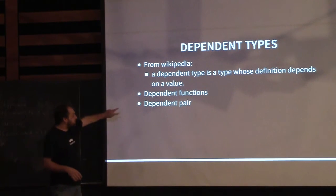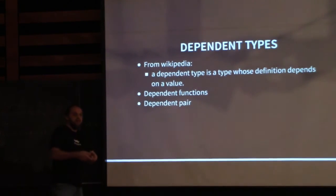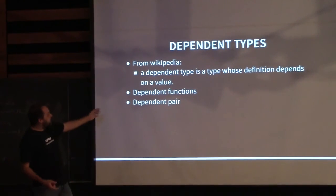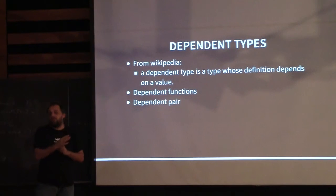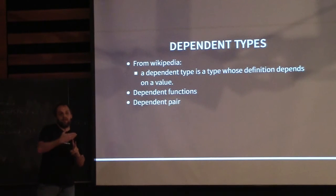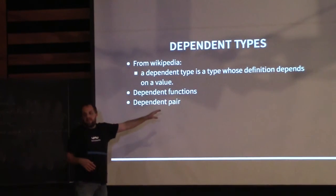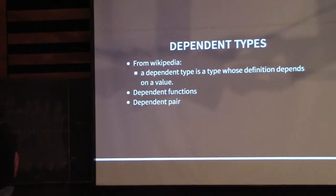There are two types of dependent types commonly used. A dependent function takes a value and returns a type based on what that value is. A dependent pair is a pair where the second value depends on the first value. You can define both of these in C++ when dealing with compile-time values. For this talk we'll focus mainly on the definitions of dependent functions.